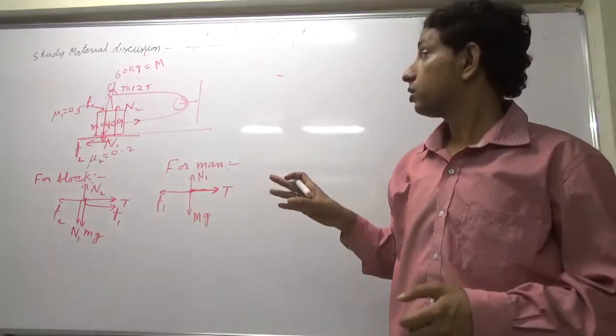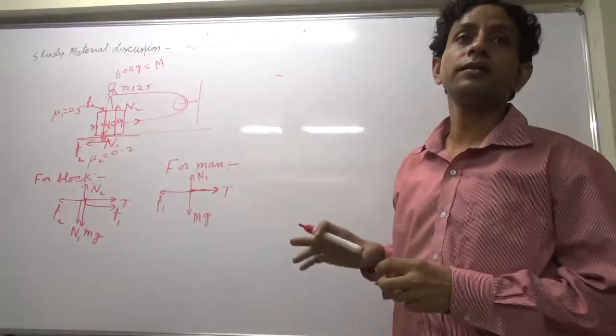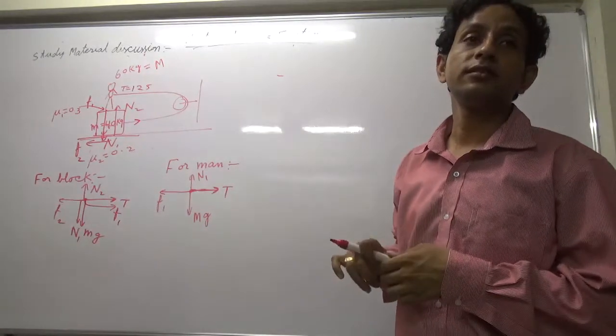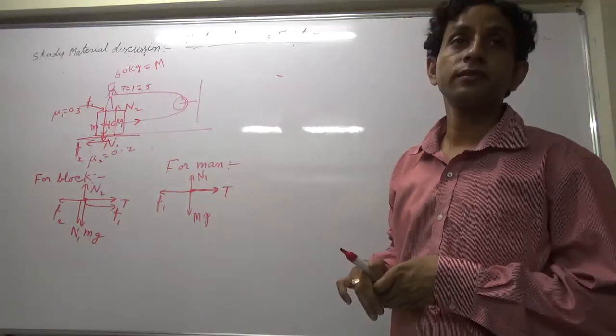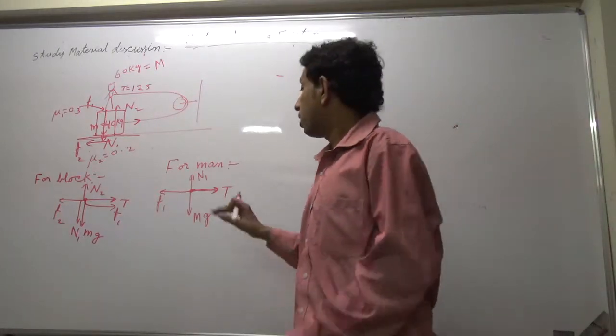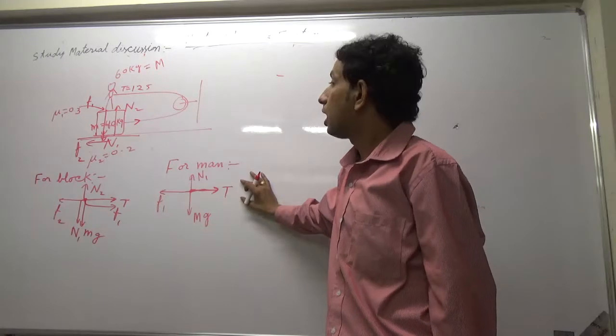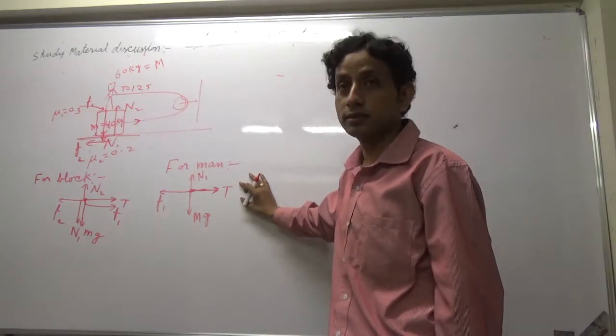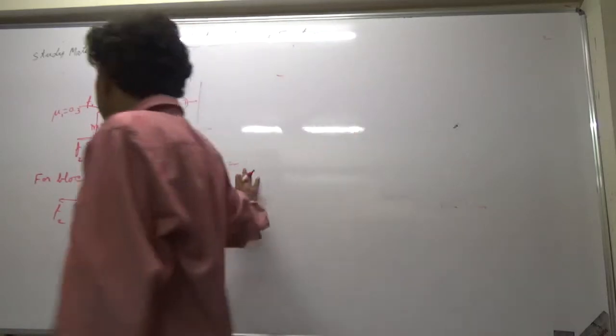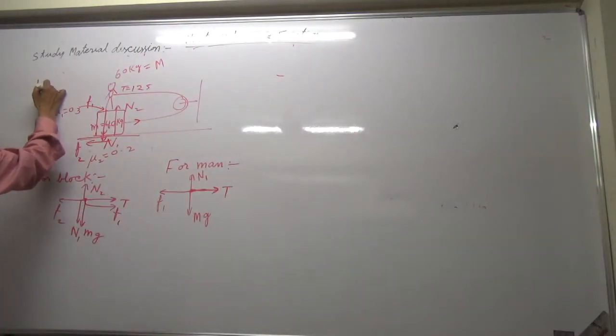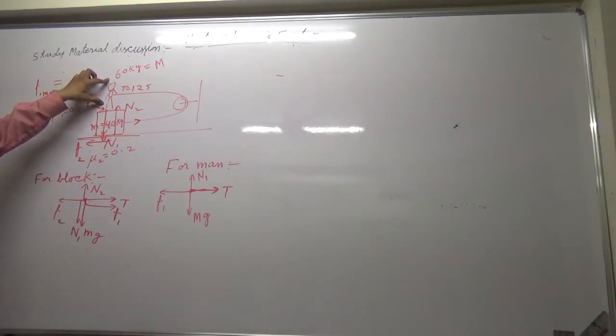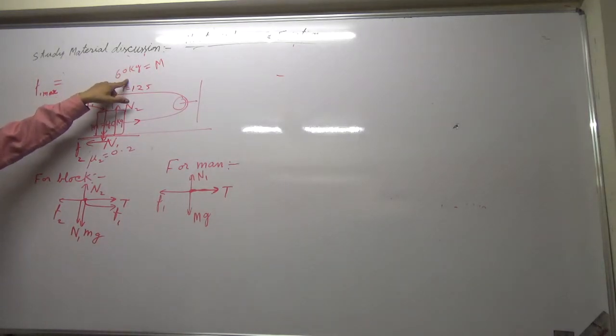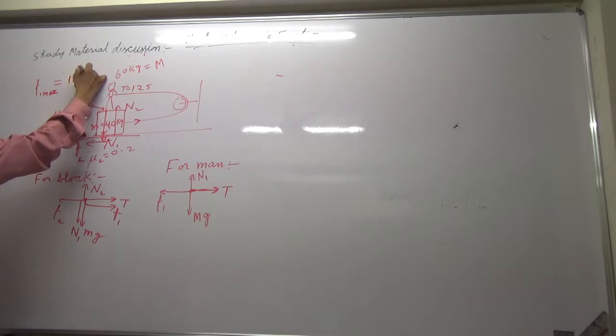F2 is on the lower surface. It cannot act on the man. Now we will calculate friction. F1 max is 60 kg into 10, 600 Newton into 0.3, that is 180 Newton. F2 max